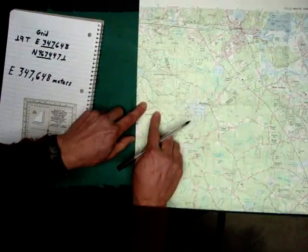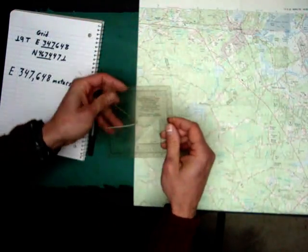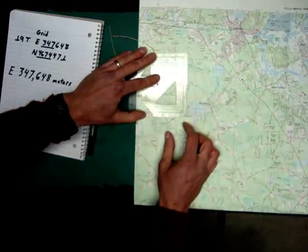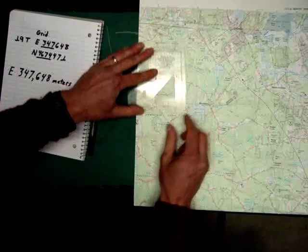Here's our square here. I'm going to use army protractor. This bottom line I line up with the line on the map.